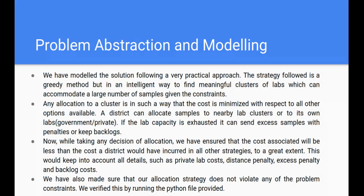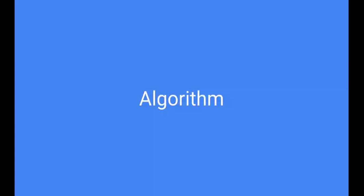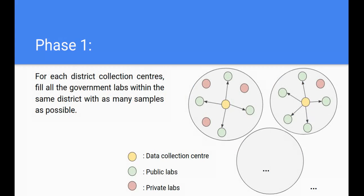Starting with the problem abstraction and modeling, we have modeled the solution following a very practical approach which is greedy in nature, but intelligent in the sense that we are trying to find meaningful clusters of labs outside the district such that the cost of allocating samples to that cluster is cheaper. We have divided the whole process into four sequential phases, and in each phase we are trying to find the cheapest option available.